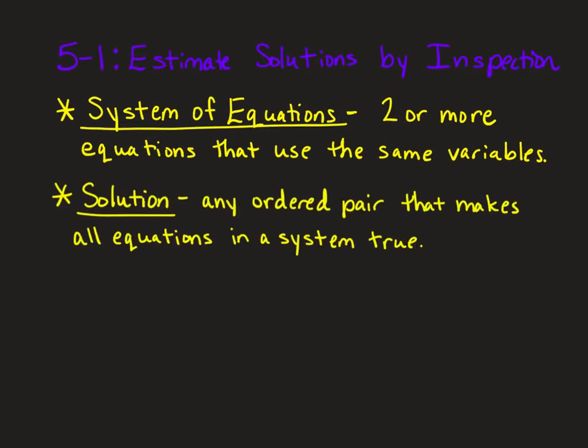A solution is just any ordered pair that makes all equations in a system true. So it would be an ordered pair x and y that, if you plug it into both equations, it's a true statement in both equations. You could have no solution for a system, or infinitely many solutions, but most of the time you'll just get one solution, and it'll be an ordered pair.